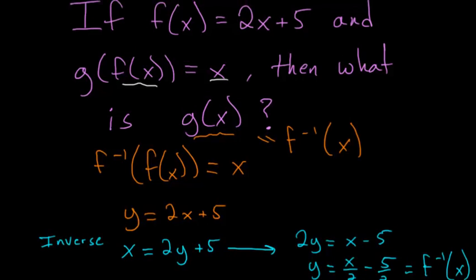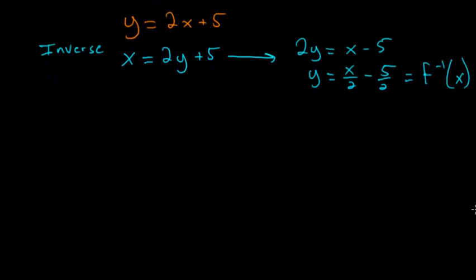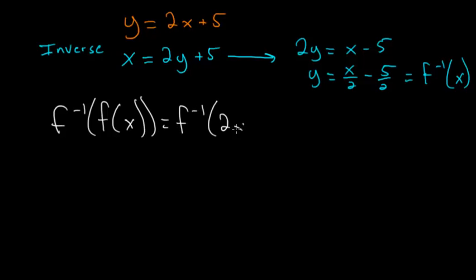So let's plug in this 2x plus 5 into our inverse function. So in other words, we have the inverse of 2x plus 5, and this is equal to 2x plus 5 over 2 minus 5 halves.